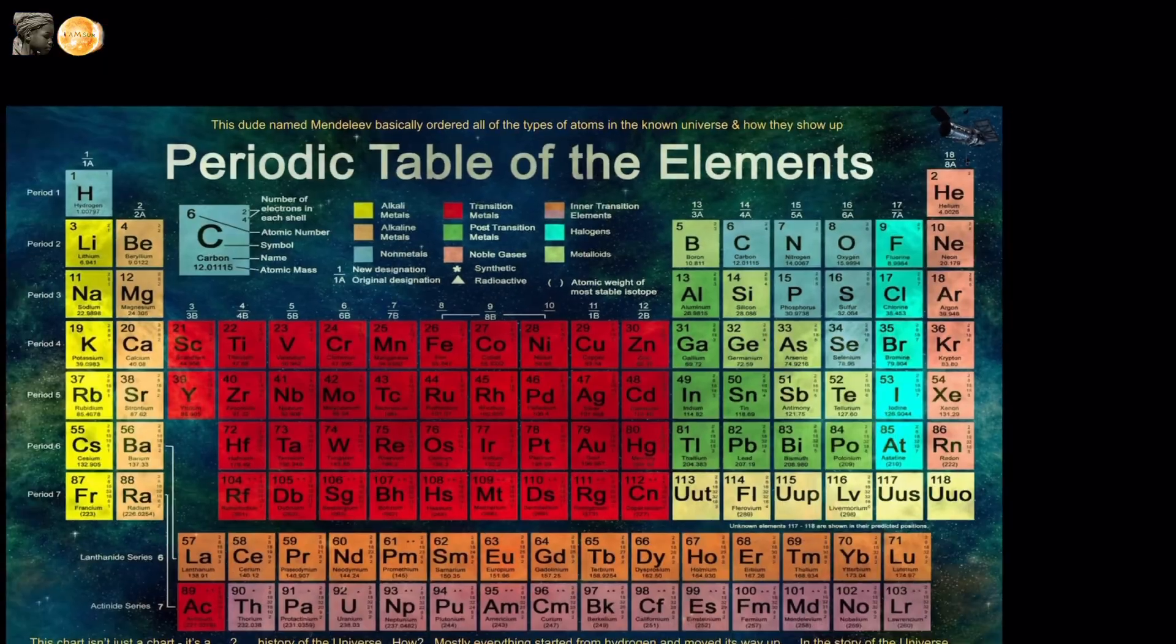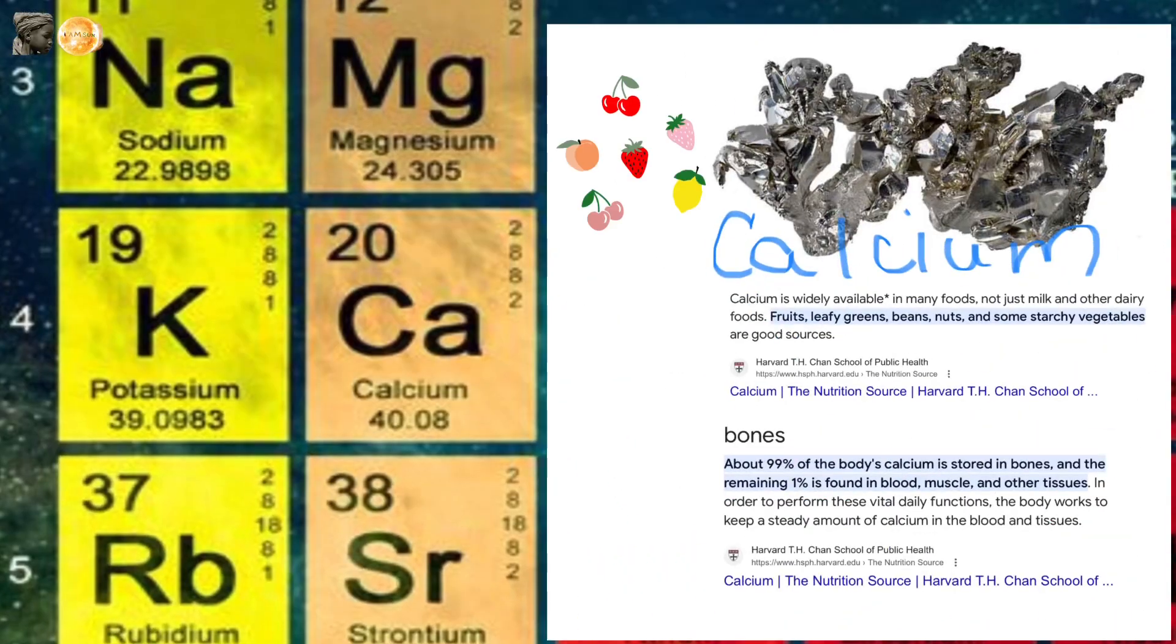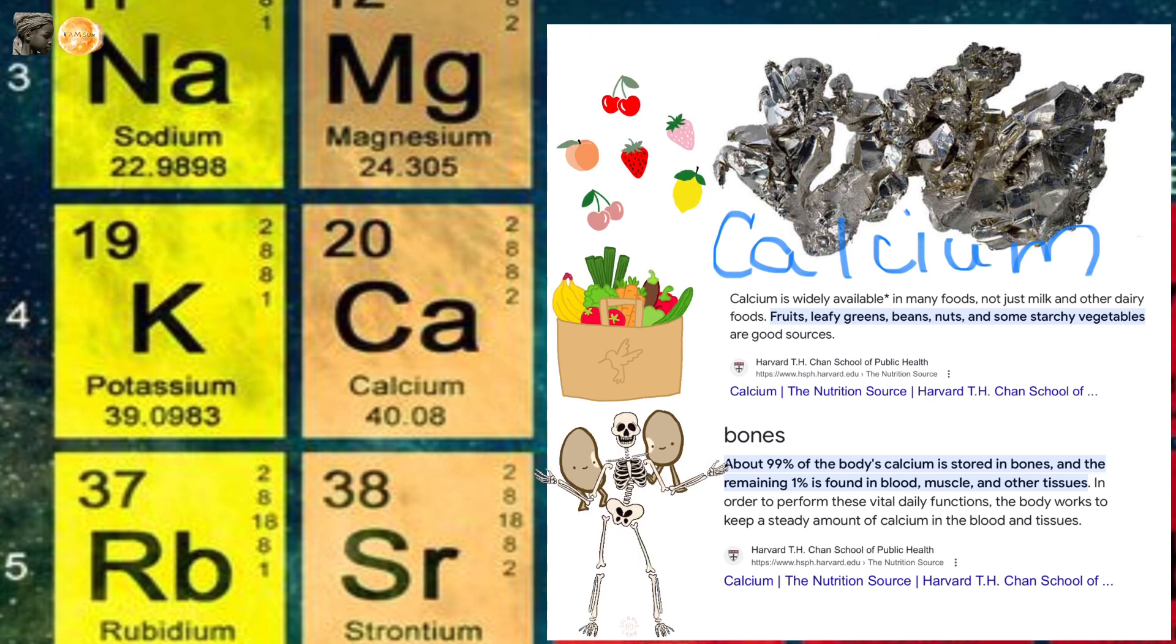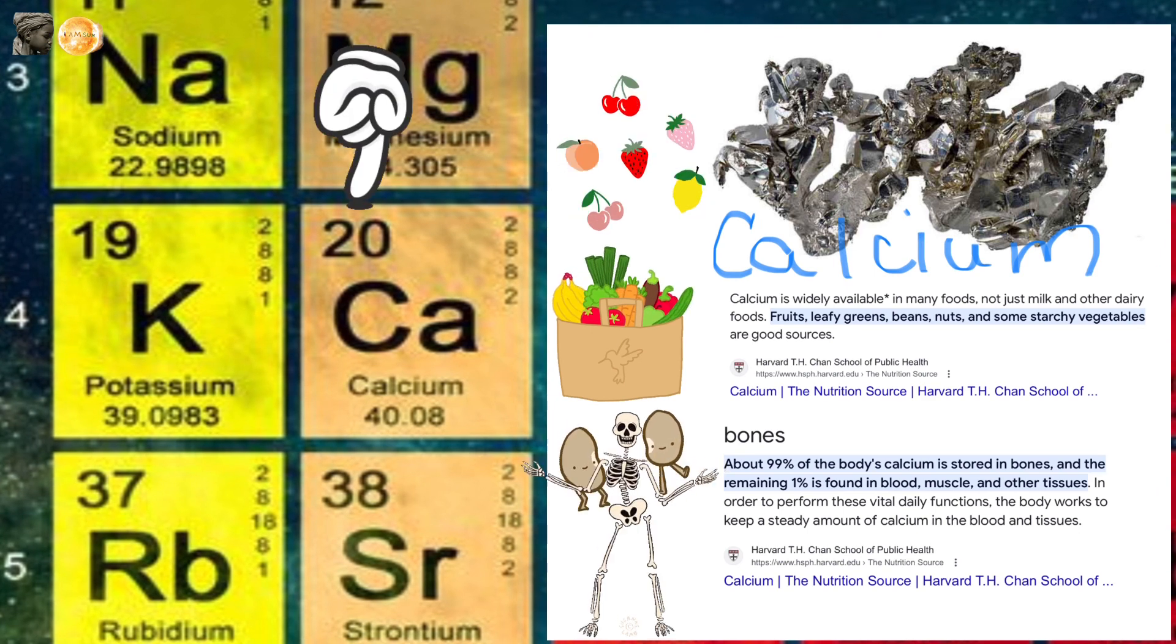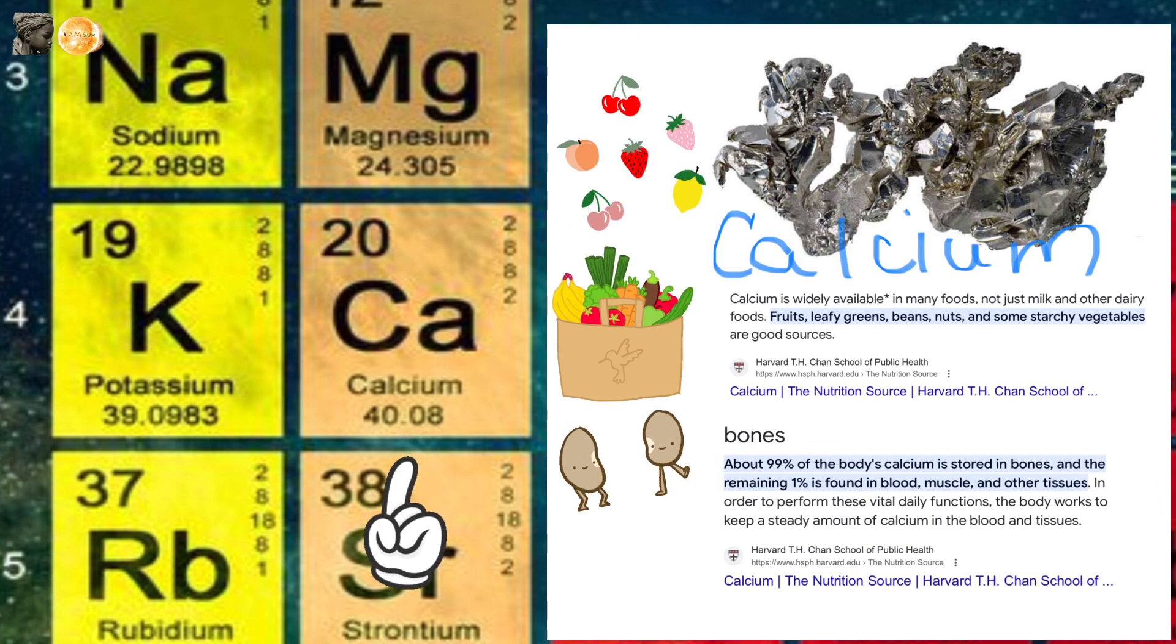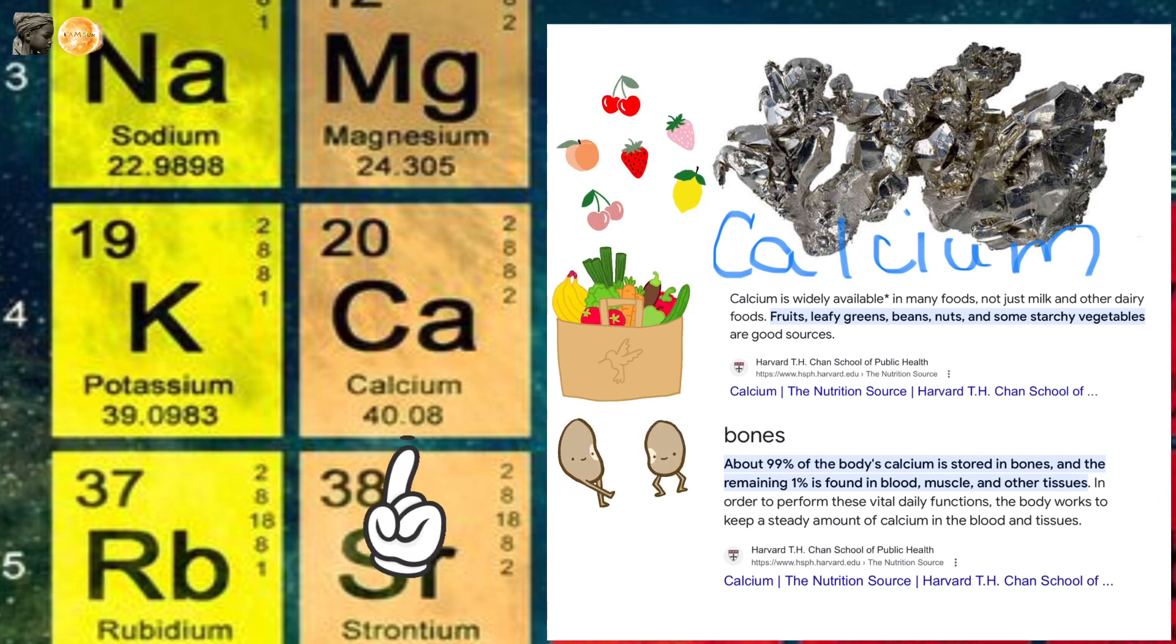Now let's look at calcium, an element found widely in fruits, leafy greens, beans, and nuts, and in our bones. Calcium has an atomic number of 20 protons and an atomic mass of 40.08. That's protons and neutrons.